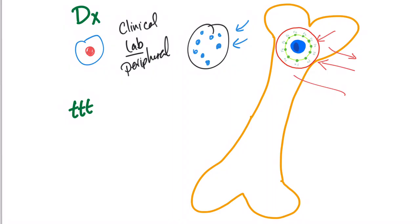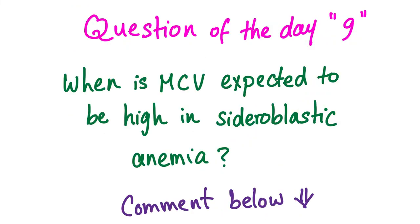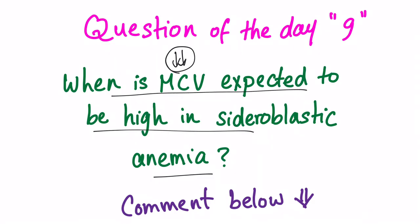Treatment: if it's vitamin B6 deficiency, give vitamin B6. If it's severe anemia, transfuse blood. If it's very severe, we can do a bone marrow transplant. Question of the day: when is MCV expected to be high in sideroblastic anemia? We said it's microcytic so it's probably low, but there is an exception — let me know in the comments below. Also, let me know which stain is used to see iron in the ringed sideroblasts on bone marrow biopsy under microscopy.